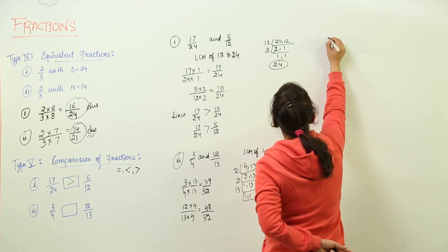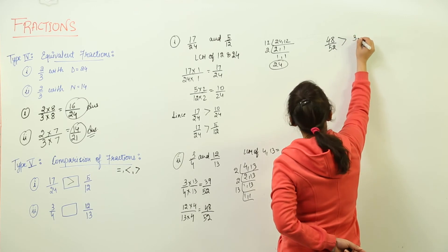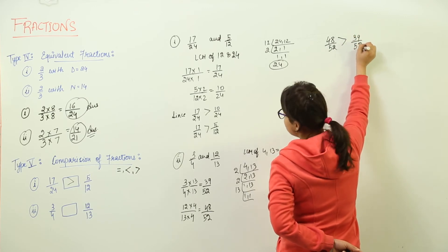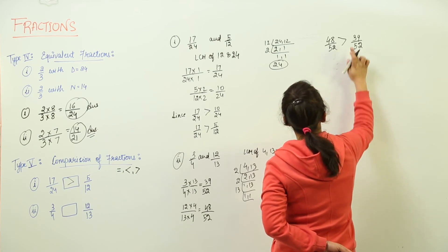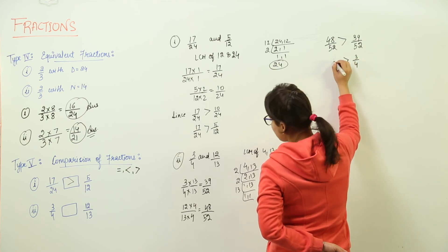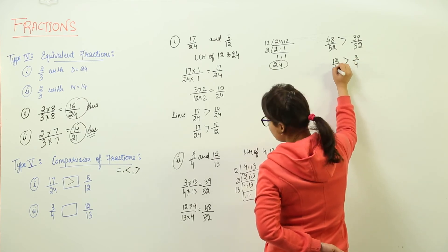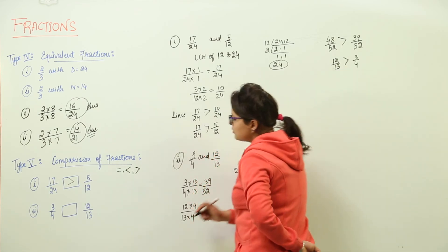So we get 48 upon 52 greater than 39 upon 52. That means the original fractions, 3 upon 4 should be written below the original fraction only, right? 3 upon 4 and here we write 12 upon 13. So we get 12 upon 13 greater than 3 upon 4.